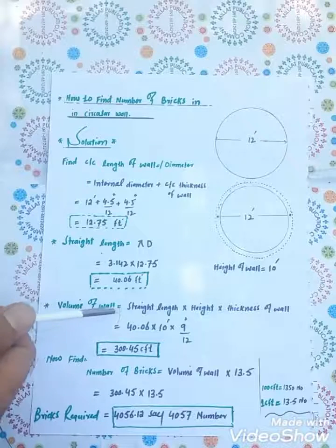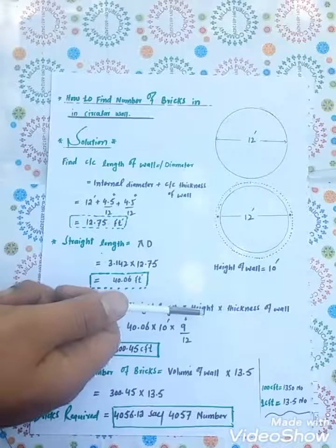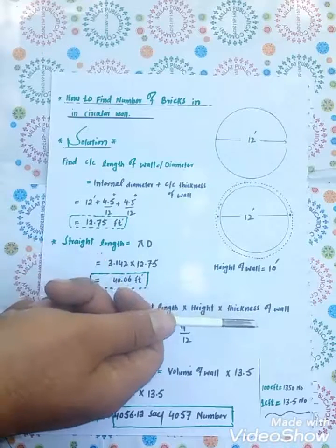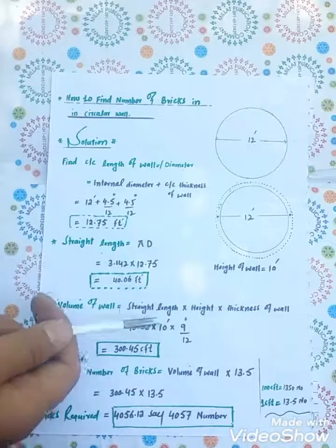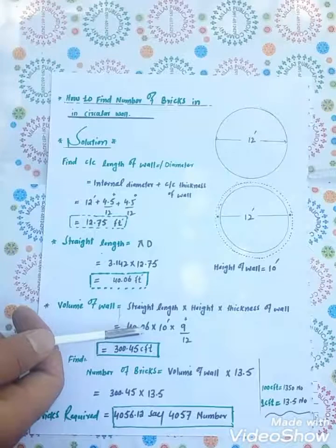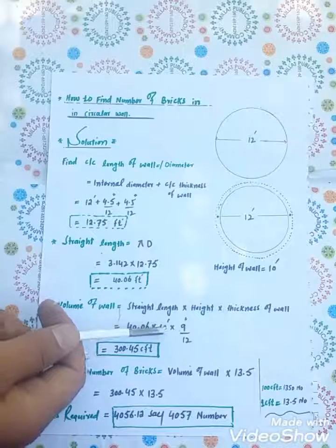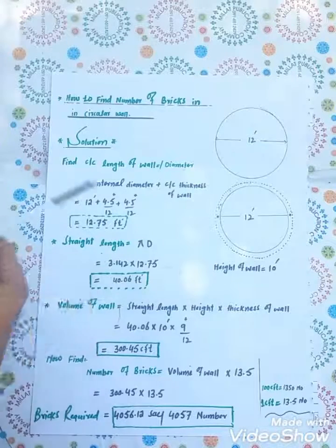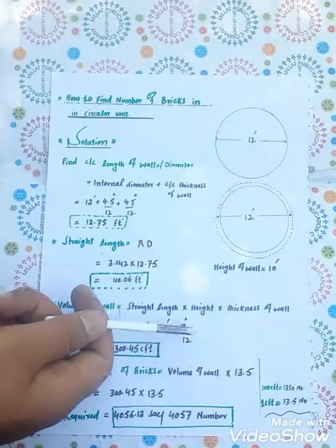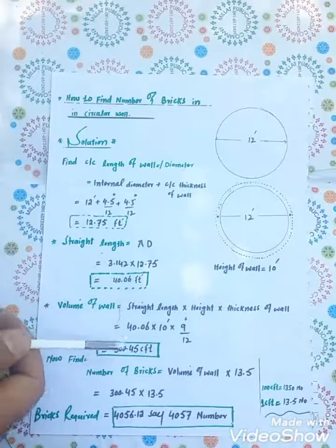Volume of wall equals straight length multiplied by height of wall multiplied by thickness of wall. Now put the value in formula: 40.06 × 10 feet × 9 inches divided by 12 to convert into feet. Volume equals 300.45 cubic feet.